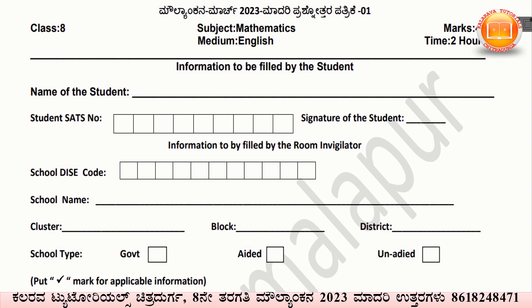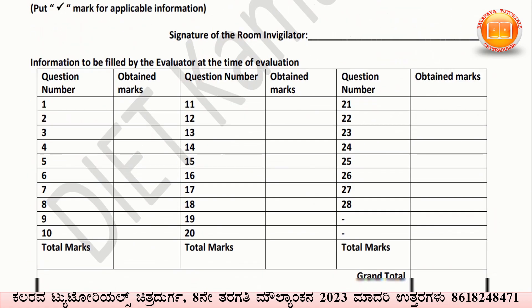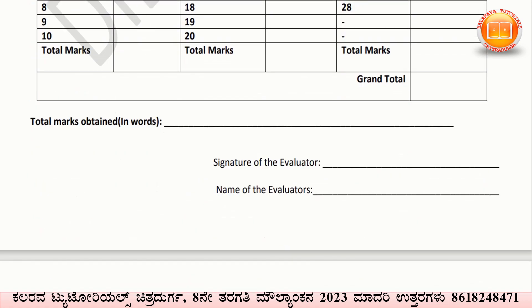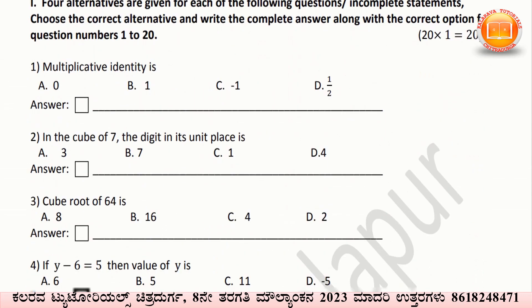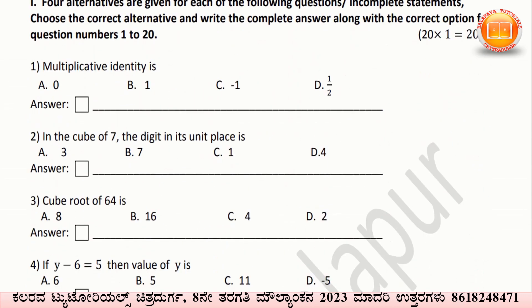Now, we have to see how the questions appear here. Students, see here — with explanation I will explain all the questions. It is easy to solve the questions. Four alternatives are given for each of the following questions. Choose the correct alternative and write the complete answer along with the correct option for question numbers 1 to 20.